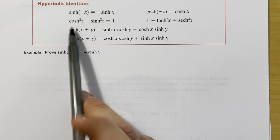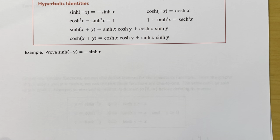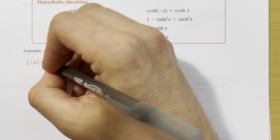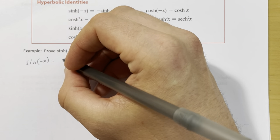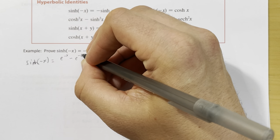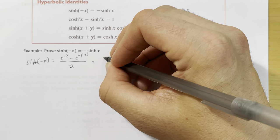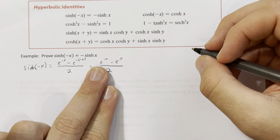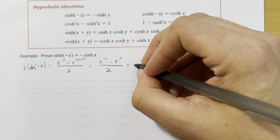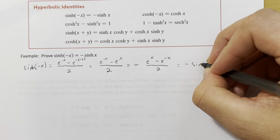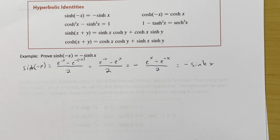Let's prove that sinh of negative x equals negative sinh of x using the exponential definition. Sinh of negative x equals e to the negative x minus e to the negative of negative x, all over 2. The double negative simplifies to give e to the negative x minus e to the x, all over 2. Factoring out a negative reverses the order: negative times e to the x minus e to the negative x over 2, which is exactly negative sinh of x. This proves the identity using only the exponential definitions.